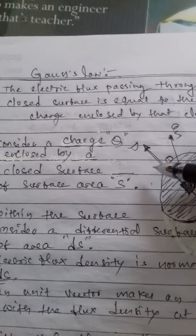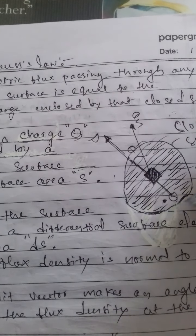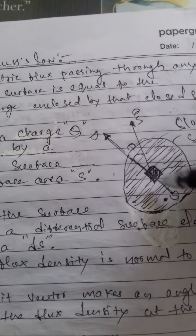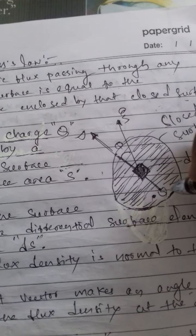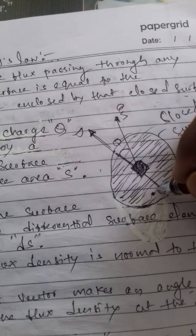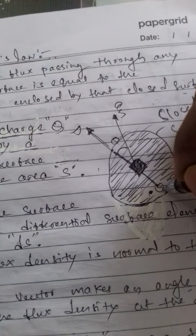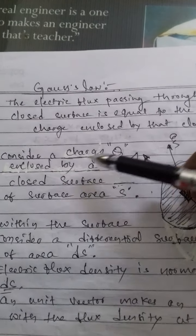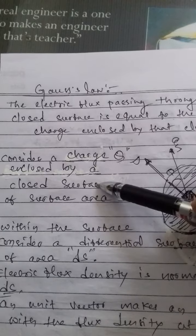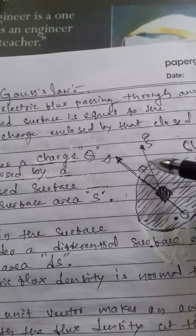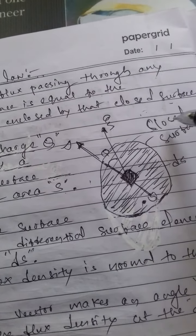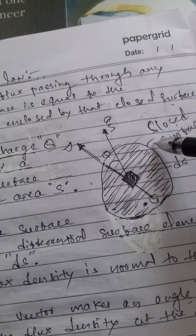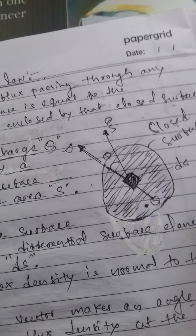Consider a closed surface with a charge Q present within it. The closed surface has a total surface area S.